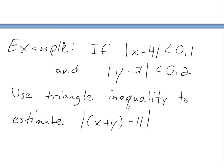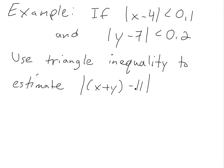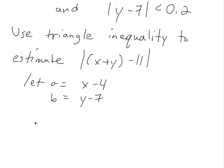Now let's look at an example to illustrate the triangle inequality. Suppose you're given that the absolute value of X minus 4 is less than 0.1, and the absolute value of Y minus 7 is less than 0.2. We want to use the triangle inequality to estimate the absolute value of X plus Y minus 11. We let A equal X minus 4, and B equal Y minus 7, so that A plus B equals X plus Y minus 11.